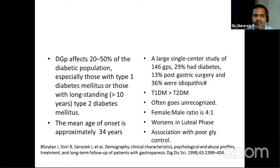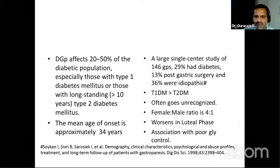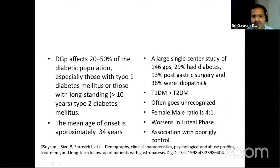Diabetic gastroparesis affects around 20 to 50 percent of the diabetic population, especially those with longer-standing diabetes. The mean age of onset is approximately 34 years. A single large center study of 146 gastroparesis patients found around 29 percent had diabetes, 13 percent were post-gastric surgery, and 36 percent were idiopathic. Type 1 diabetes was more prevalent than type 2 in that cohort.